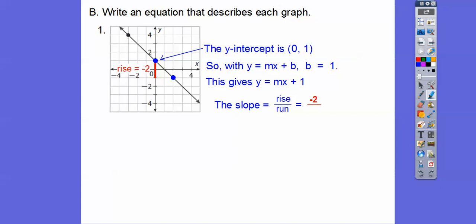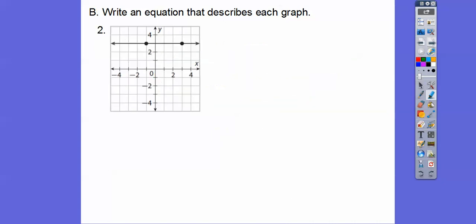So the rise is negative 2, and I could have picked this point up here and then went over that one. We just have to reduce the fraction a little bit more. So negative 2 over 2, which gets me negative 1. So that's the slope. So it's y equals negative 1x plus 1, or just y equals negative x plus 1.